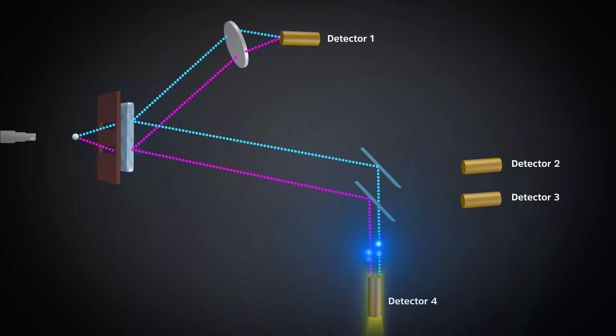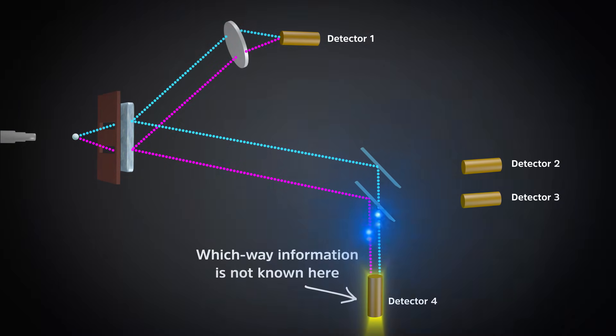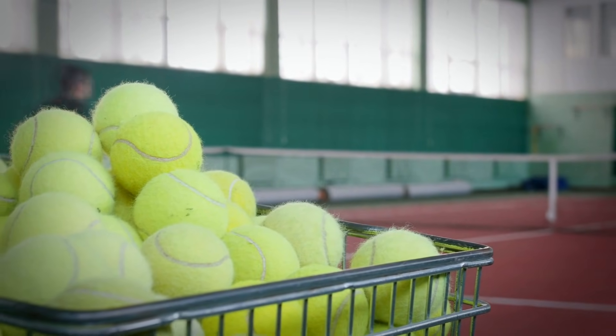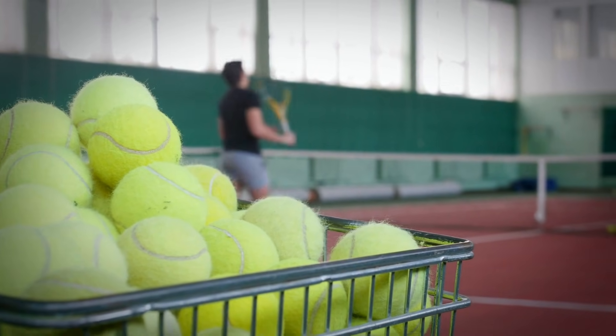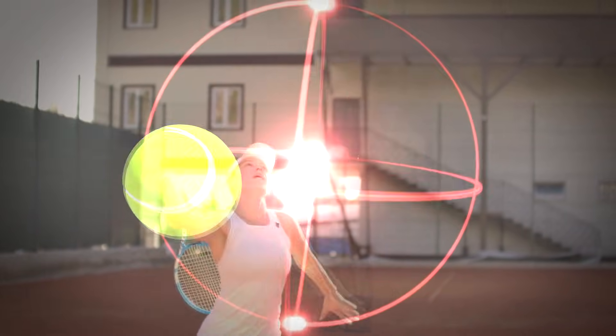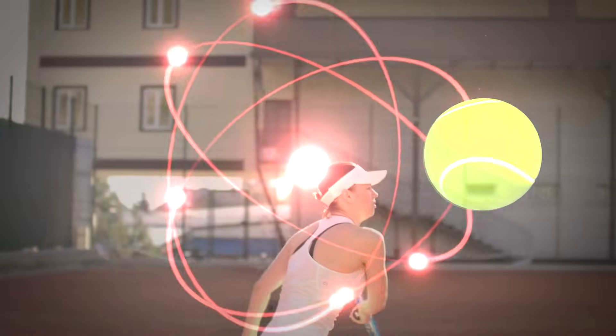And this behavior seems really strange to us because this is not something that we observe in our macro world. But why is that? Why don't we see this kind of strange and mysterious behavior in everyday lives? Why doesn't this tennis ball behave like a photon, or an electron, or an atom? At what point does the quantum behavior stop, and classical behavior of everyday objects like this begin? And why is there a cutoff?